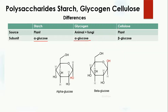In the case of cellulose, beta glucose is used. Beta glucose has the OH group above the plane — this is carbon one — and when the OH group is present above the plane, it is known as beta glucose. When the hydroxyl group is present below the plane, it is known as alpha glucose. So in starch and glycogen, alpha glucose is present, while in cellulose, beta glucose is present.